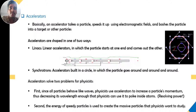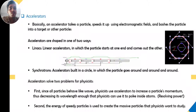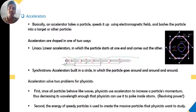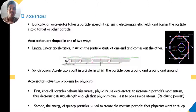The second purpose is that the energy of a speedy particle is used to create massive particles that physicists want to study. These energized particles can be made to hit a particular target, and from that target many other particles are emitted. For example, if you incident a proton on any material target, a plenty of reactions and interactions can happen, resulting in many small particles whose behavior can reveal underlying physics.